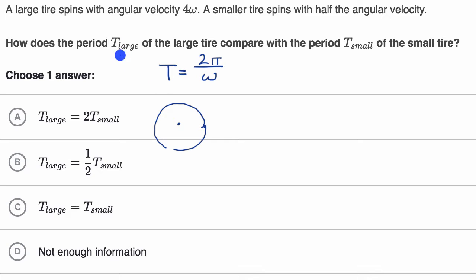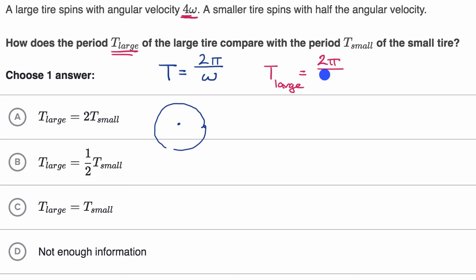So T sub large is going to be equal to two pi over four omega, since the large tire spins with angular velocity four omega. And T sub small is going to be equal to two pi over two omega, since the smaller tire spins with half the angular velocity — half of four omega is two omega.